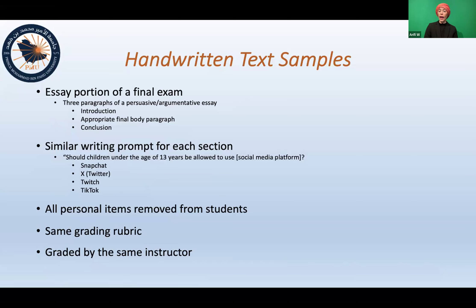The writing samples were handwritten essay portions of a final exam — three paragraphs of a persuasive or argumentative essay including an introduction, an appropriate body paragraph, and a conclusion. There was a similar writing prompt for each of the four sections, as they were all taught by the same instructor. The question was whether children under the age of 13 should be allowed to use a specific social media platform — common platforms such as Snap, X (formerly Twitter), Twitch, and TikTok. During the exam, all personal items including electronics were removed from students, who were asked to show their phones being placed on silent and into their bags, so they had no way of producing AI-generated content. All exams were graded using the same rubric by the same instructor.